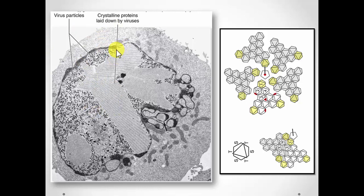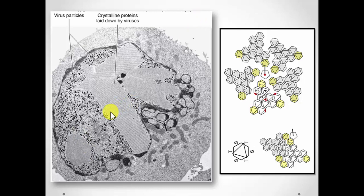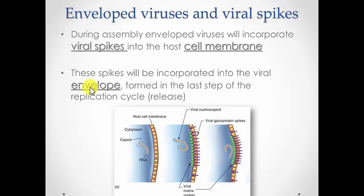Ultimately what the virus is doing is playing a numbers game. It puts out enough particles that eventually some will form a virus — whether the percentage is 1% or 0.1%, as long as it forms a couple viruses that can exit and infect a new cell, it's successful. That's the assembly in a nutshell: synthesis makes the protein and copies the DNA/RNA, and assembly is the spontaneous formation of the capsid, followed by release.